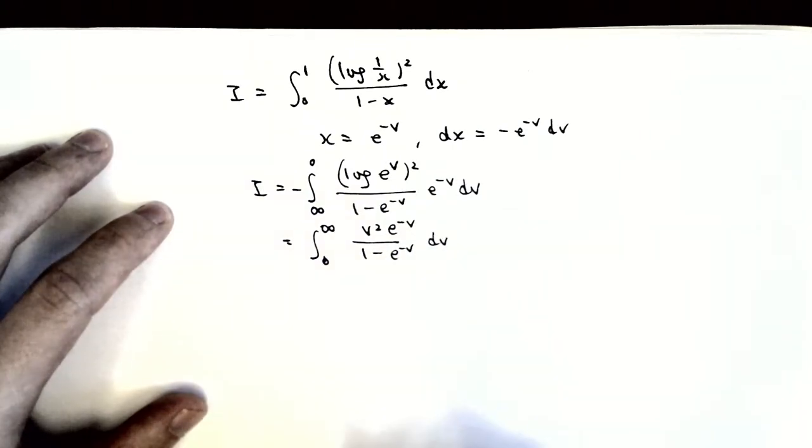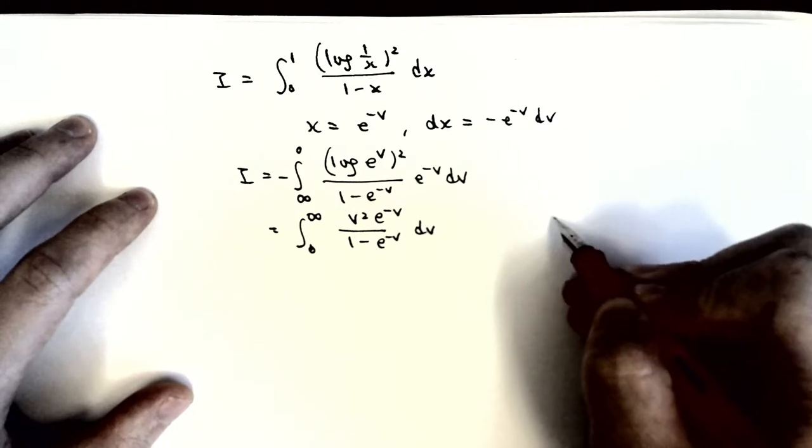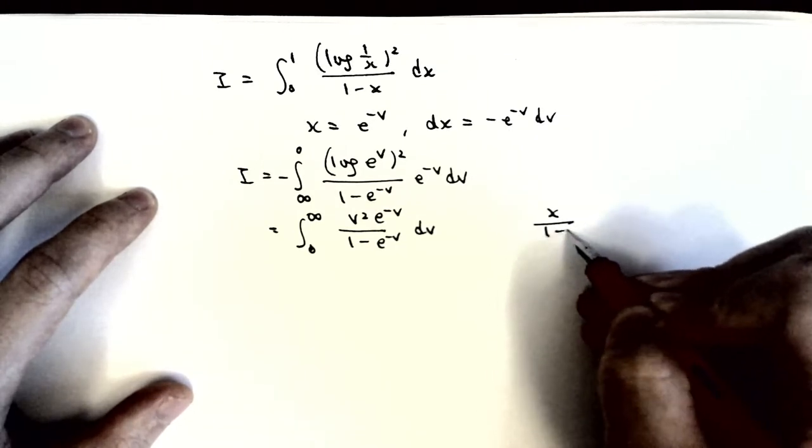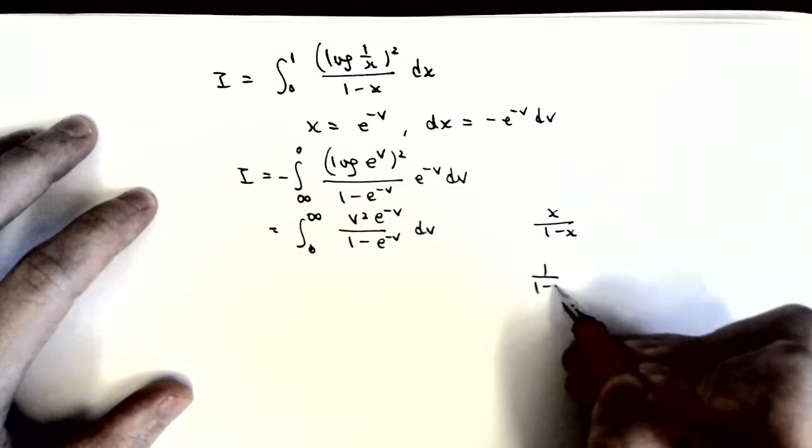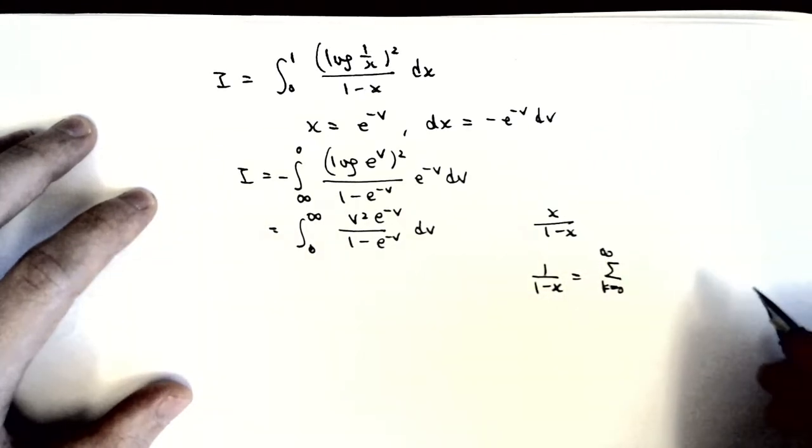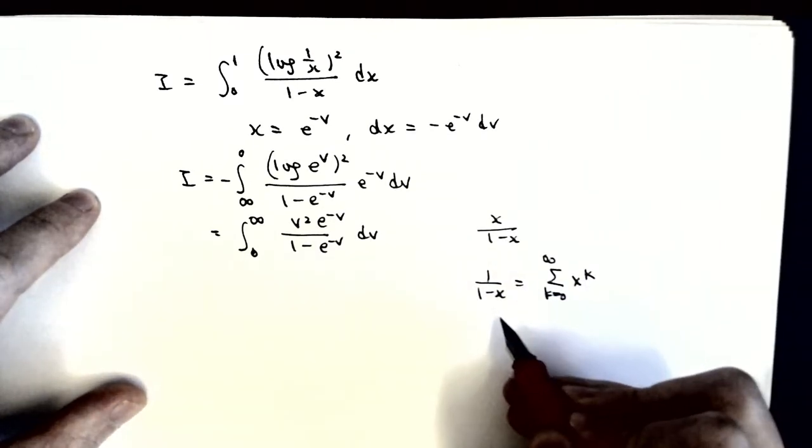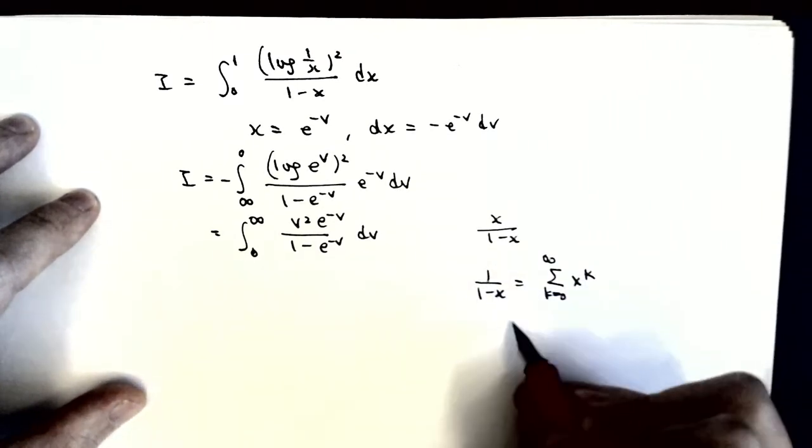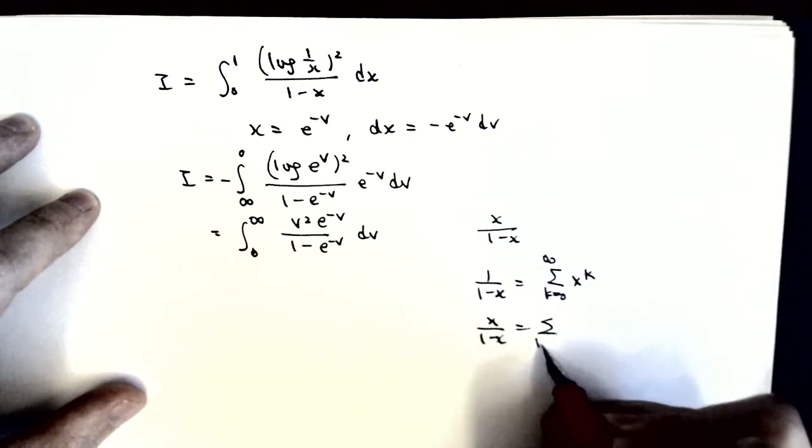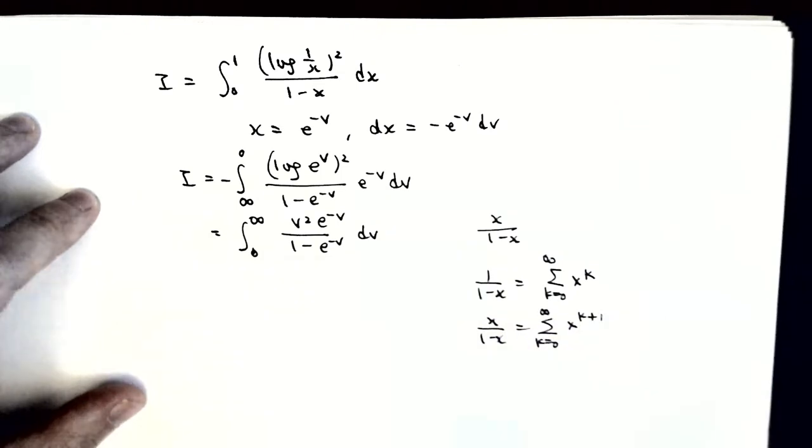Now, we know we want the series like x over 1 minus x. So 1 over 1 minus x is just a geometric series: sum from k equals 0 to infinity of x to the k. And then we just times x, giving us sum from 0 to infinity of x to the k plus 1.